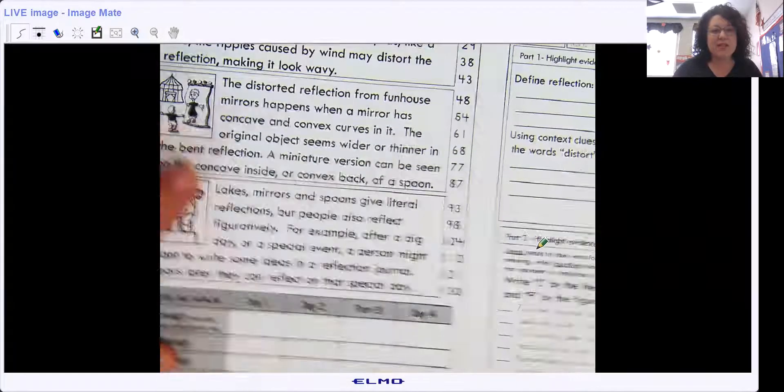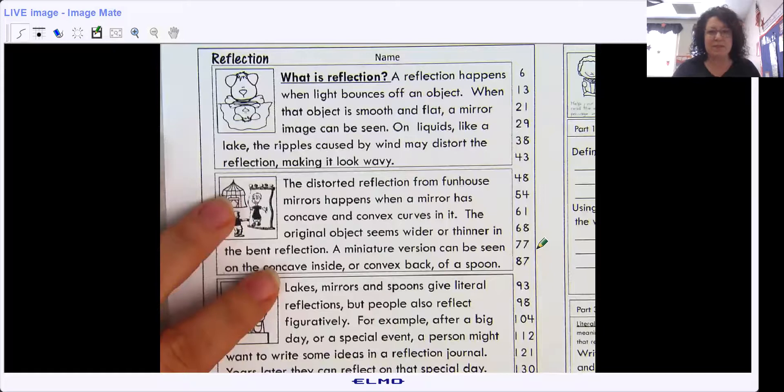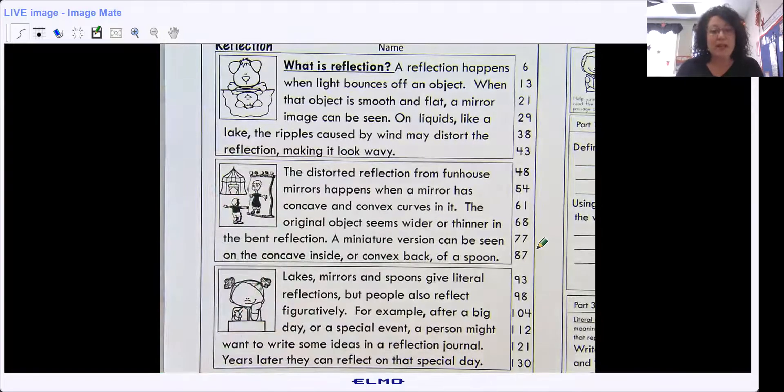Alright, here we go. So this is all about reflection. What is reflection? A reflection happens when light bounces off an object. When that object is smooth and flat,